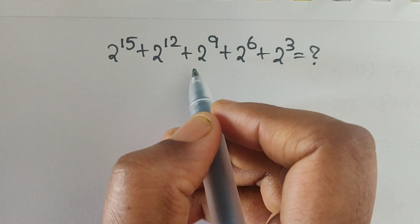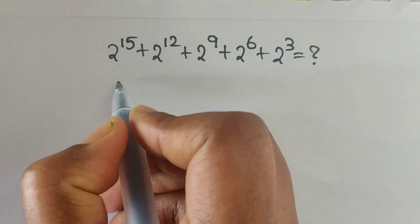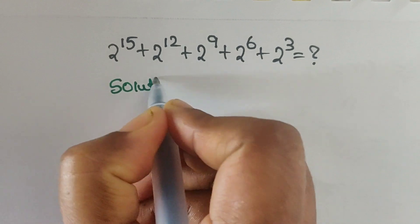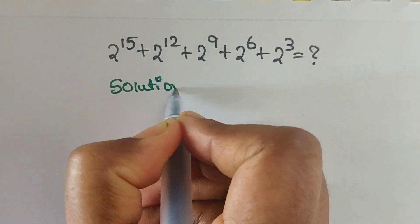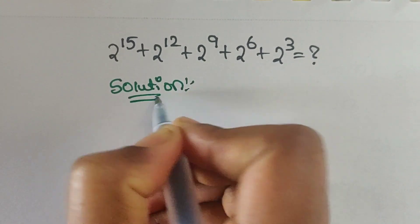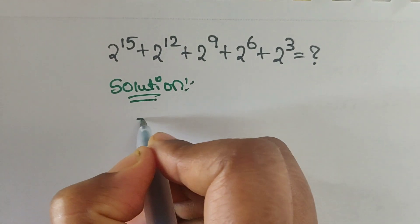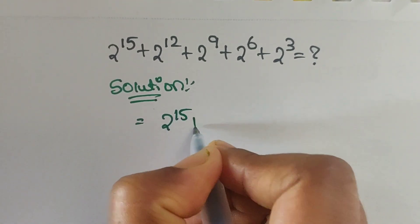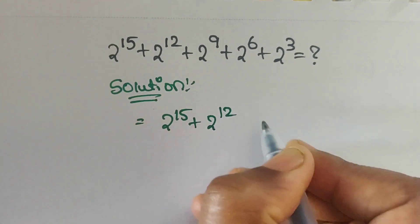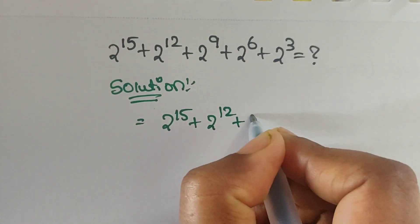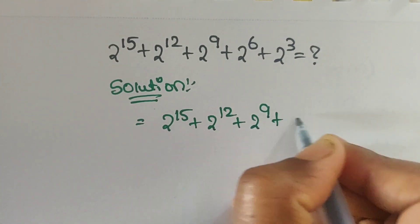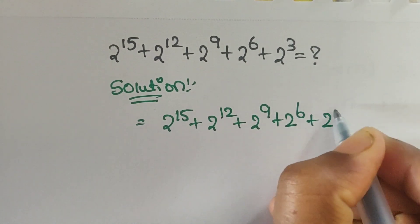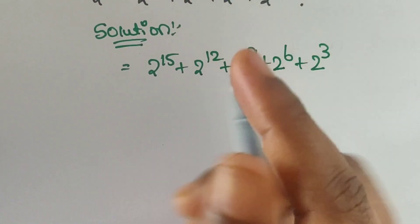Let me give you a clue. See here — solution. The question is 2 power 15 plus 2 power 12 plus 2 power 9 plus 2 power 6 plus 2 power 3.